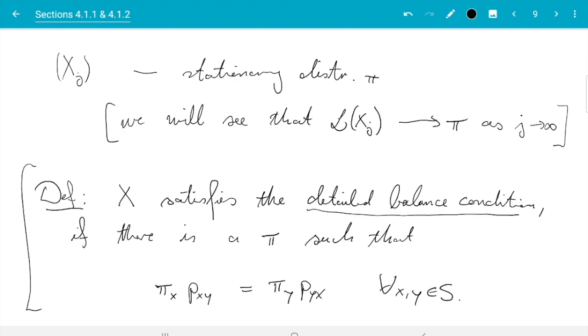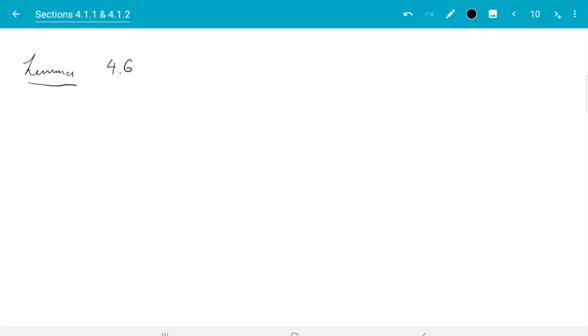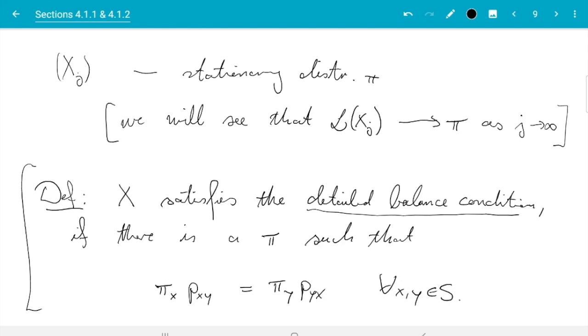So that condition involves the probability of going from x to y on the left and from y to x on the right. And there is no reason these two should be equal. But there is a relation between the two which sometimes hold and sometimes doesn't. And that is sometimes pi_x p_xy equals pi_y p_yx for some vector pi. And if that holds, then we say the Markov chain satisfies the detailed balance condition.